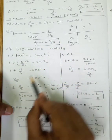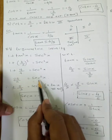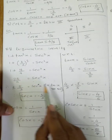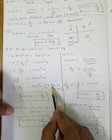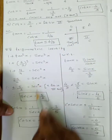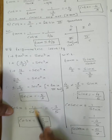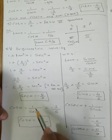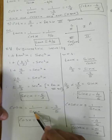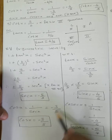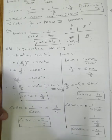Now using 1 plus tan²x equals sec²x: 1 plus (4 by 3)² equals sec²x, so 1 plus 16 by 9 equals sec²x, giving 25 by 9 equals sec²x. Wait — so sec²x equals 16 by 9, so secant value is plus or minus 5 by 3. Since x is in the third quadrant, secant is negative, so secant x equals minus 5 by 3.